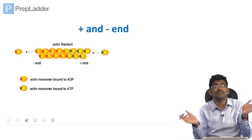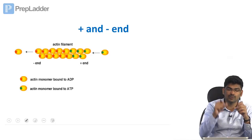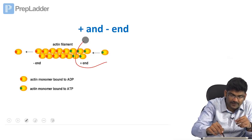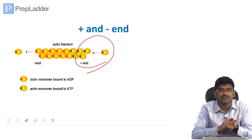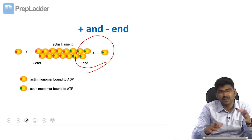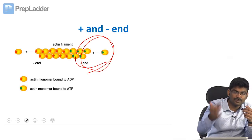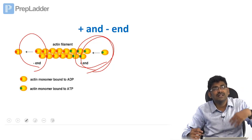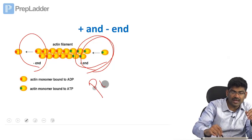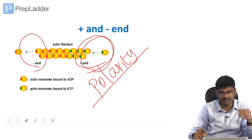Actin molecules continuously associate and dissociate to form the filament. Microfilament is the thinnest one. The end at which active association of actin molecules happens is the plus end. When ATP binds, association occurs; when ADP is present after hydrolysis, dissociation happens. So ATP drives association (plus end) and ADP drives dissociation (minus end). Microfilaments have polarity — a plus end and a minus end.